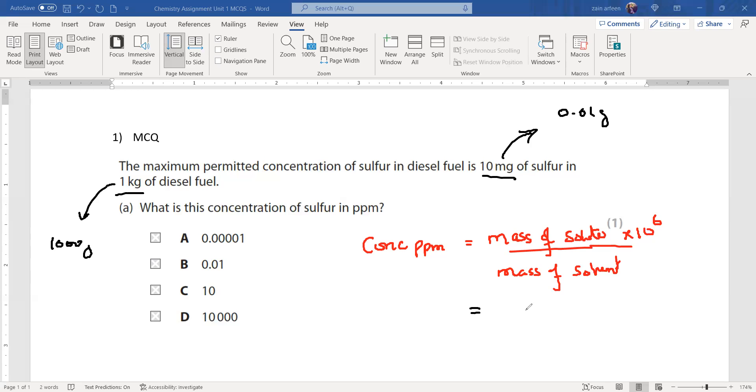Now when we solve, so this will be 0.01 divided by 1000 into 1 million. So when we simplify the concentration, this will come out as option C.